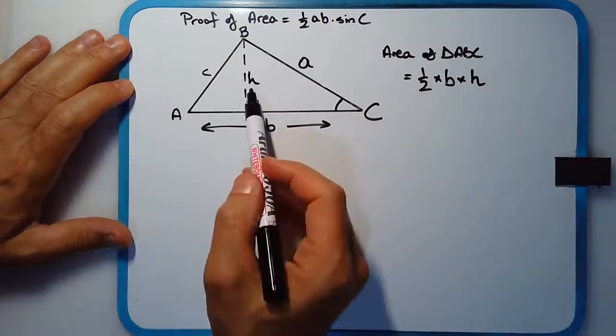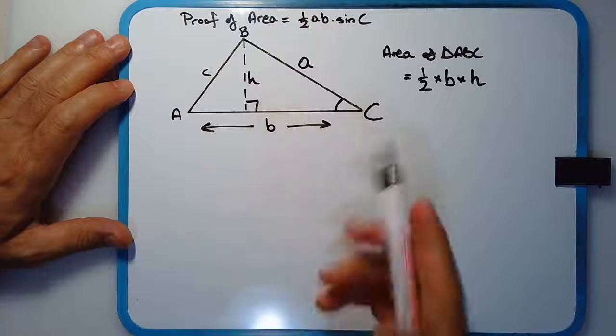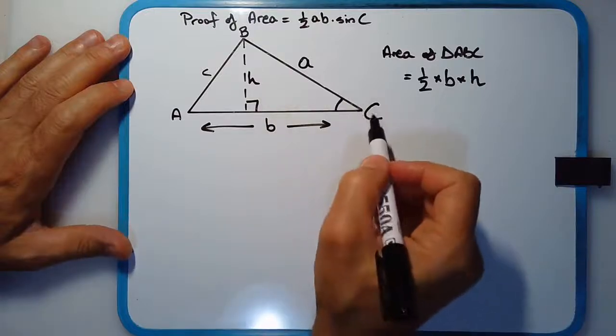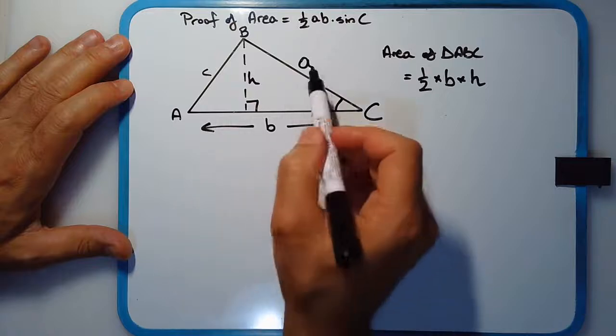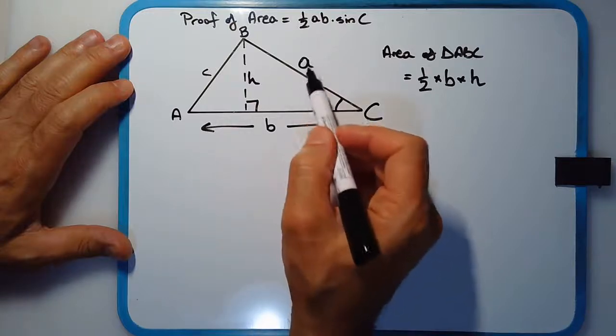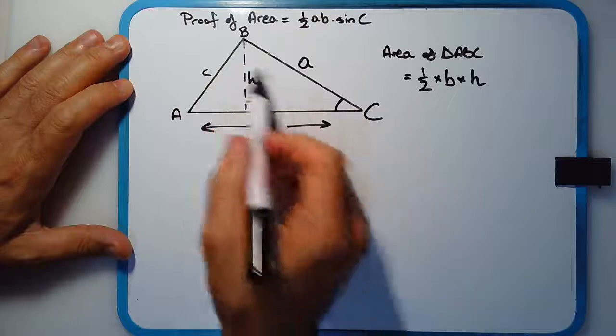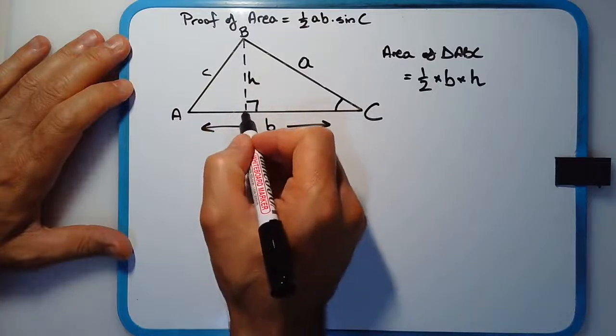The thing is though, we're not given the height. What we are given is angle C, the base B, and this side A here, which is actually the hypotenuse of this triangle here.